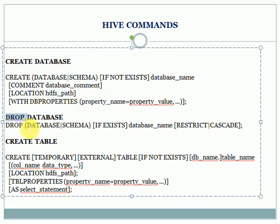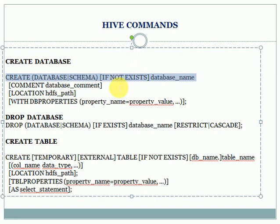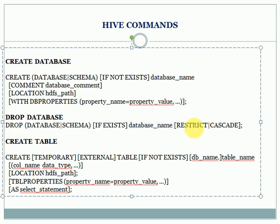The same applies for dropping a database. The syntax is: DROP DATABASE or SCHEMA, with IF EXISTS — meaning it will only drop if the database exists. You specify the database name you want to drop, and there are two modes: RESTRICT and CASCADE. RESTRICT is the default — if any tables or data are present it will not drop. If you want to drop the database completely along with all its data, you can use CASCADE.